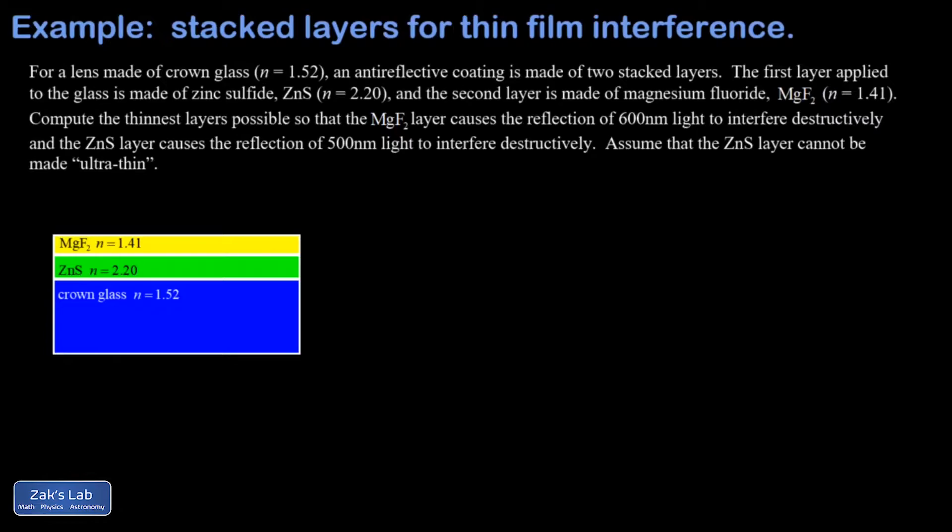You can tune these thin films to kill many wavelengths of light. On our outermost layer we have magnesium fluoride with an index of refraction of 1.41. Under that we have a zinc sulfide layer with an index of refraction of 2.20, and the crown glass itself has an index of refraction of 1.52.